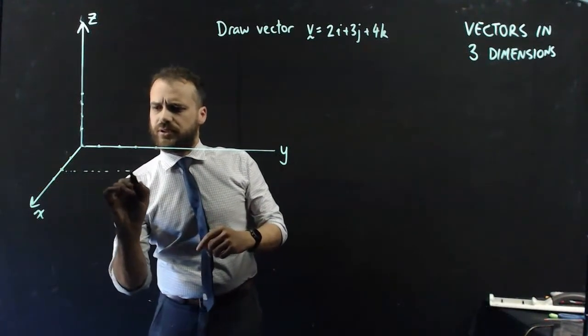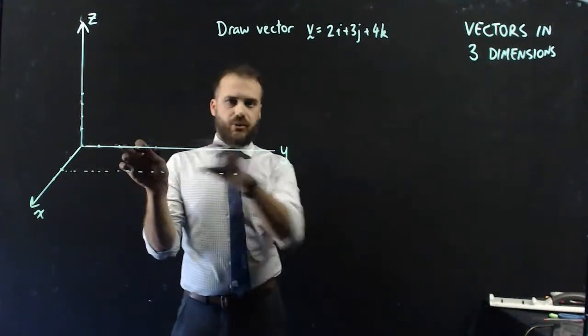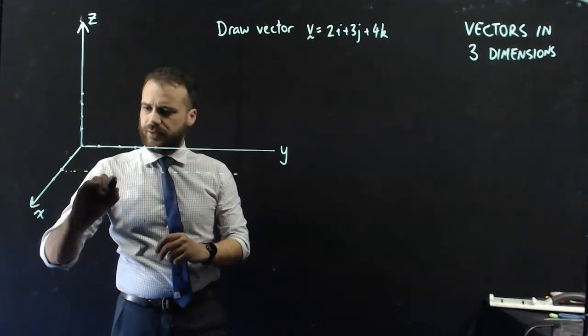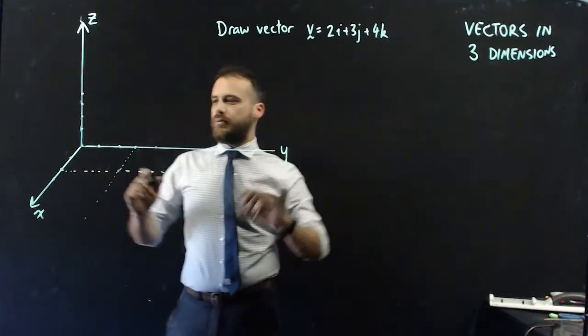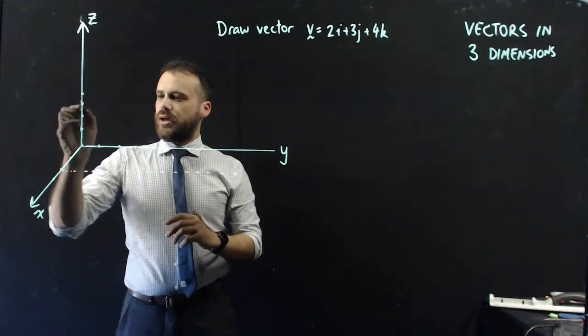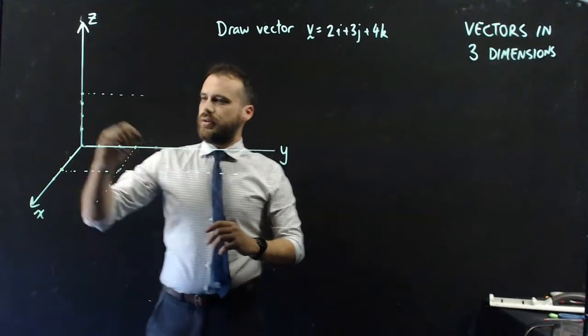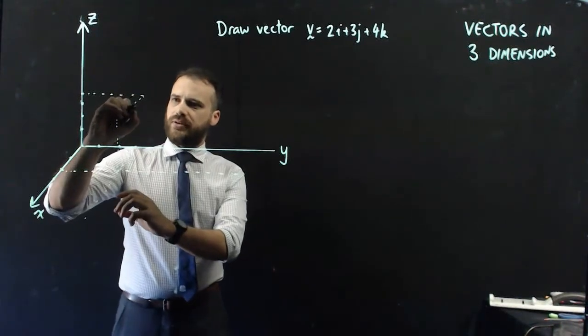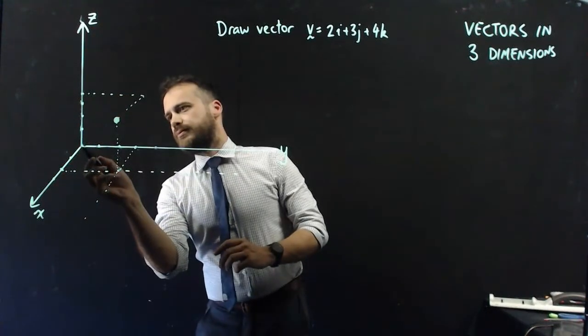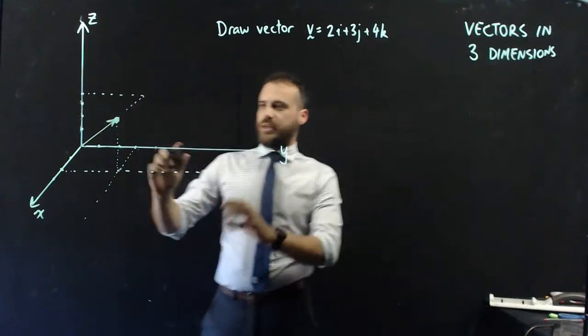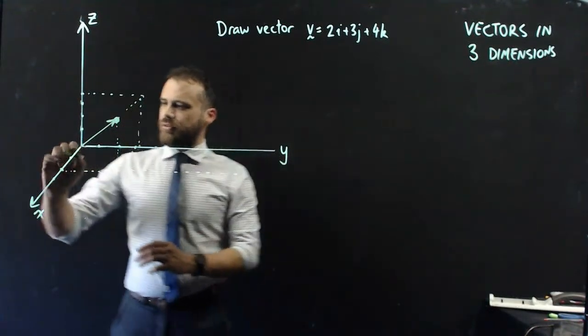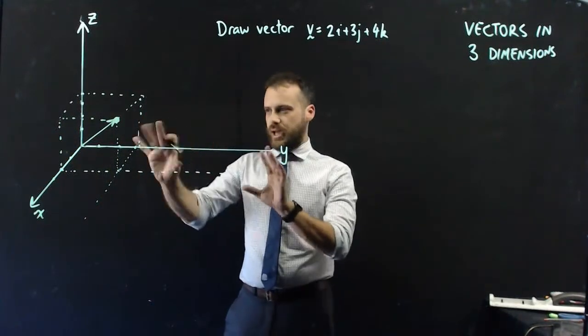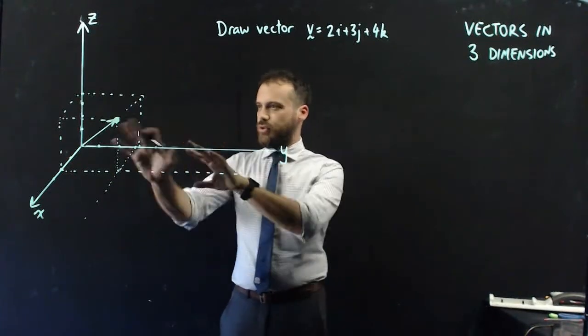3j. j is our y component, so 1, 2, 3. And I'm just going to put in some dotted lines parallel to the x-axis here like this. And then I'm going to go up 4k. So, 1, 2, 3, 4. And I'm just going to put in some dotted lines parallel to the x-axis here like that. Now I'm also going to put in some lines here. Like that. There it is. There's our vector. What we've kind of created is like a box for our vector to live in. And you can see that that kind of makes it look three-dimensional, like it's coming out of our box. And that is 2i plus 3j plus 4k right there.